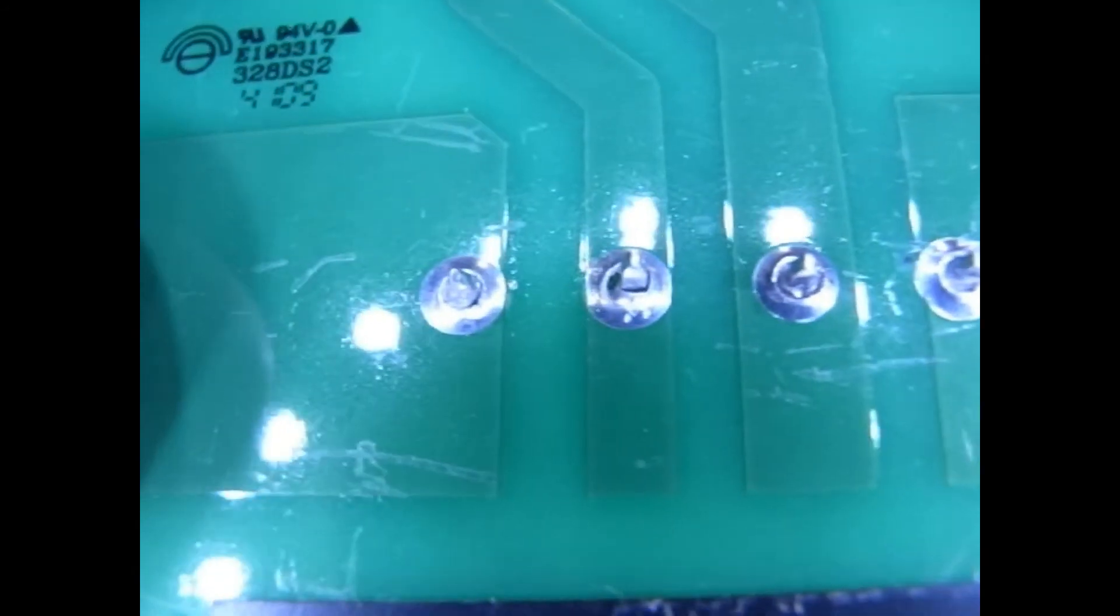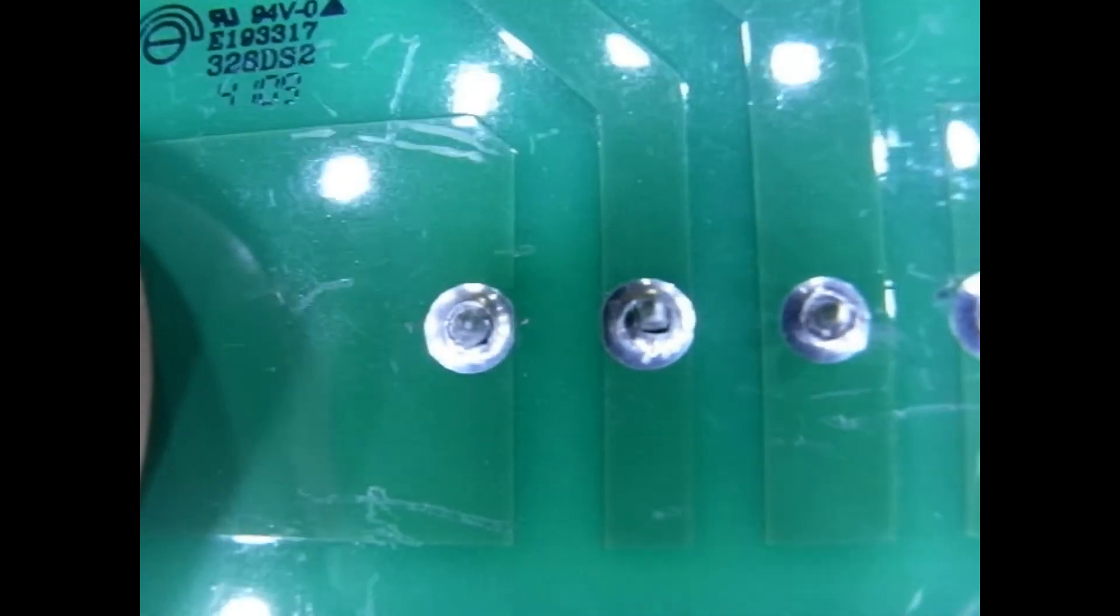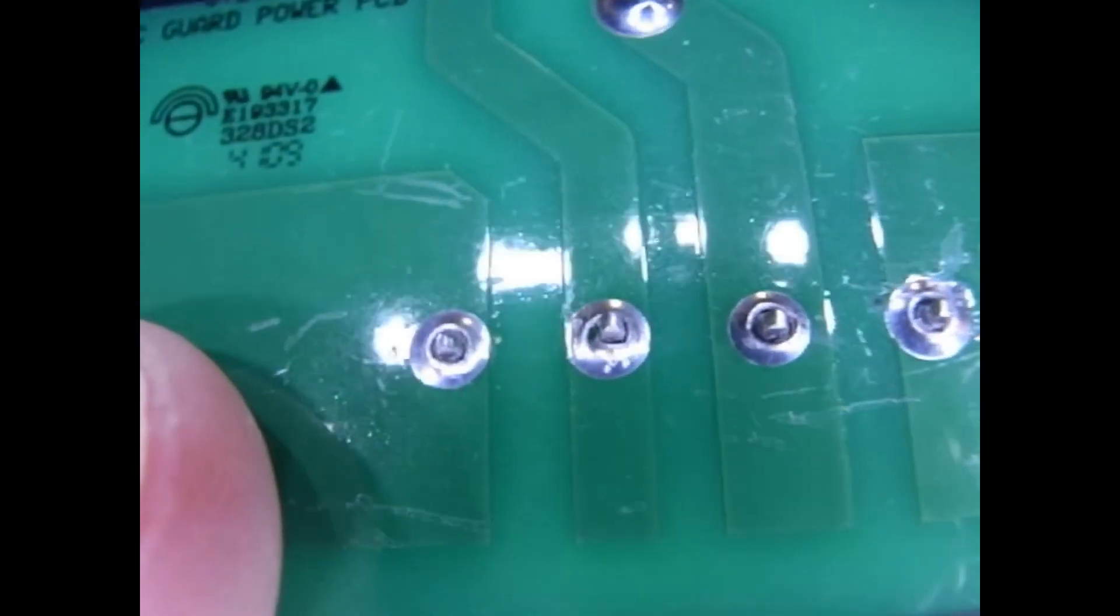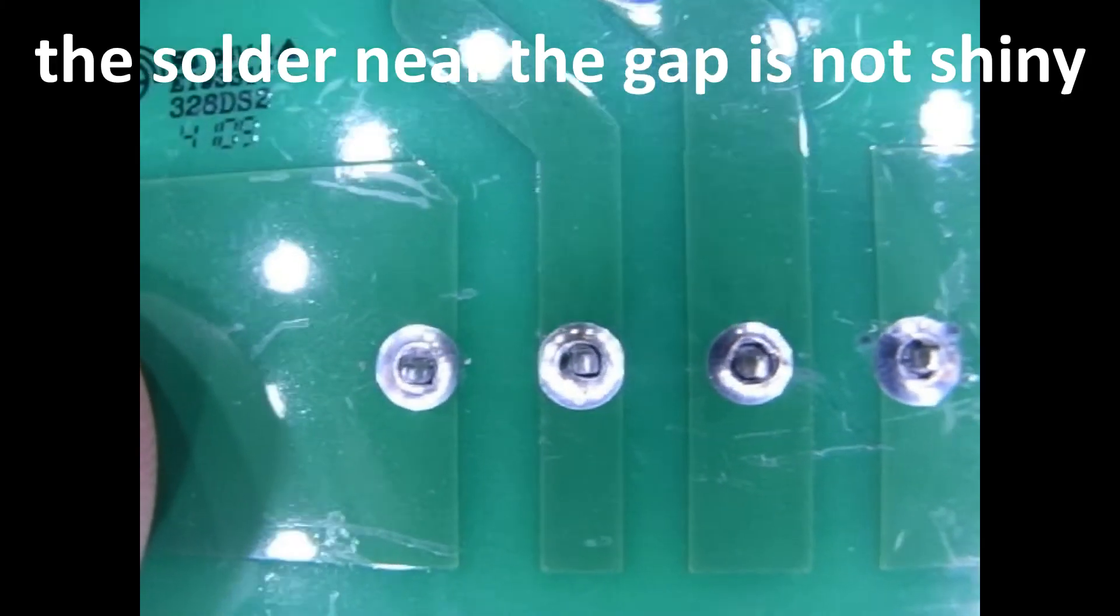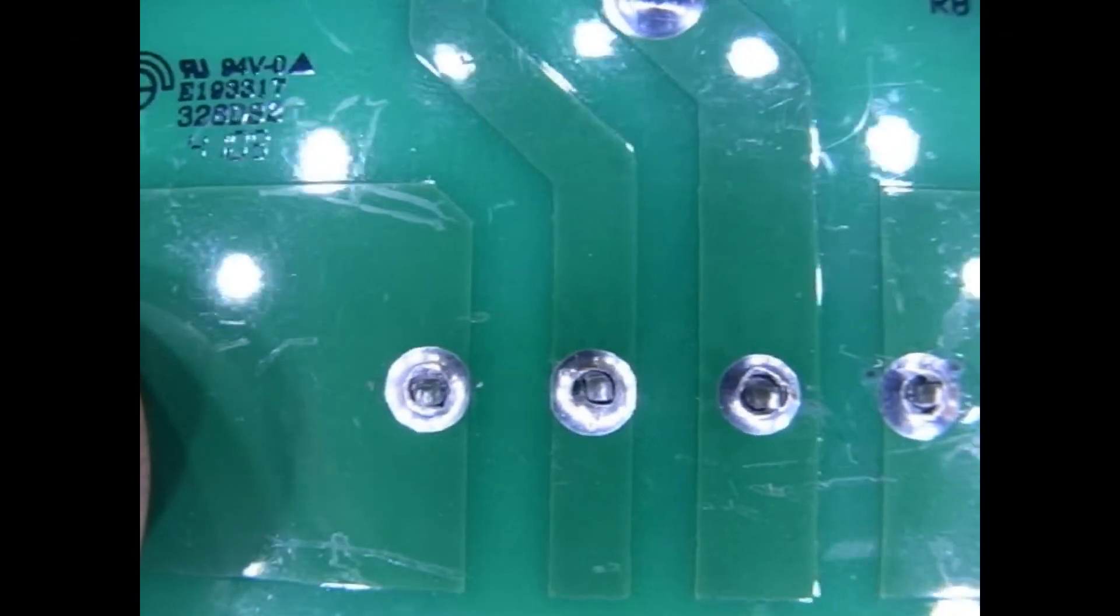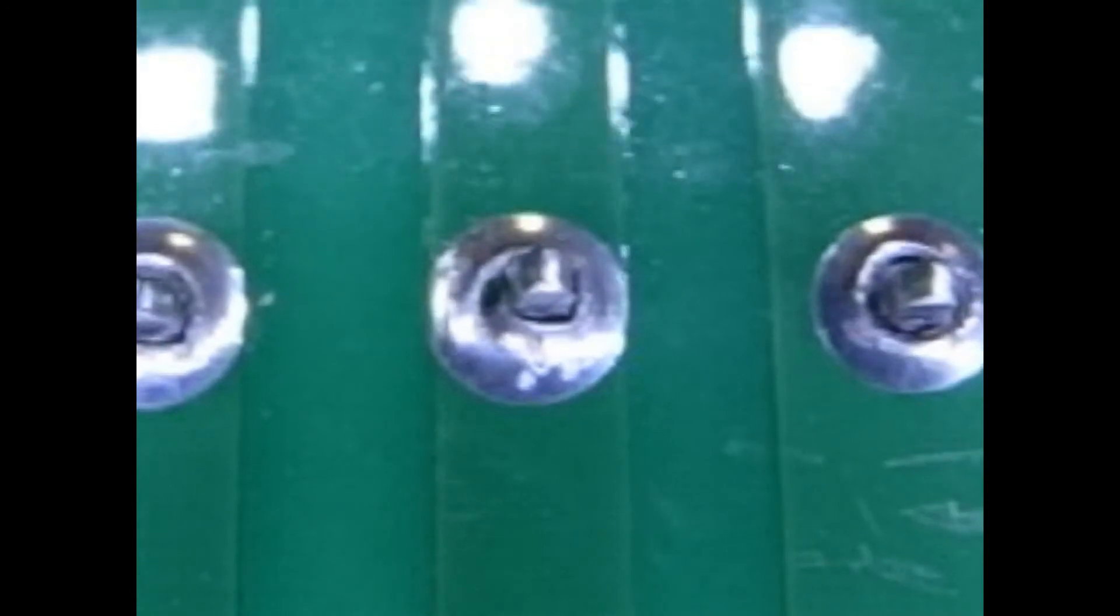Let's get our extreme close-up. I don't know if you can see, especially on that second pin, right in the middle of the screen right now, you can see that around the pin it looks gray and it's not shiny. It's not reflecting the light.